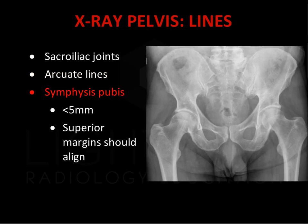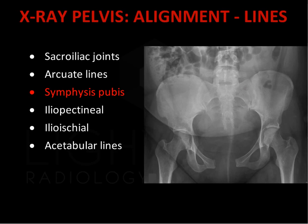The pubic symphysis should be less than 5 mm in width, and the superior margins of the pubic symphysis should align. Ligamentous disruption of the pubic symphysis can occur in trauma, resulting in diastasis with widening. This is a case of an open book pelvis, where there is purely ligamentous disruption of the main pelvic ring involving both the sacroiliac joints and pubic symphysis.